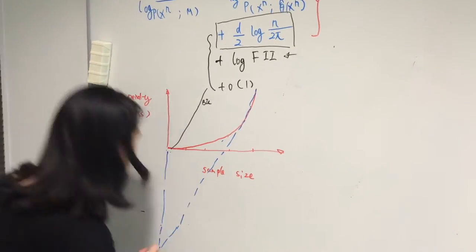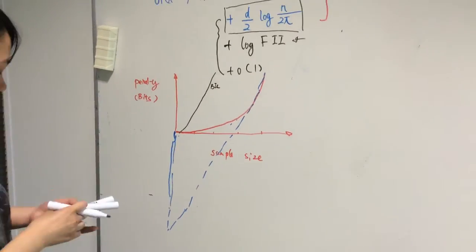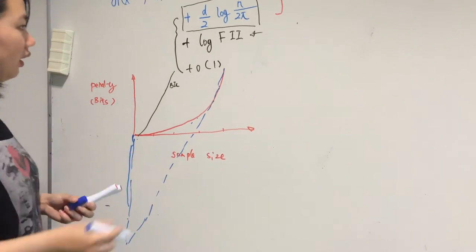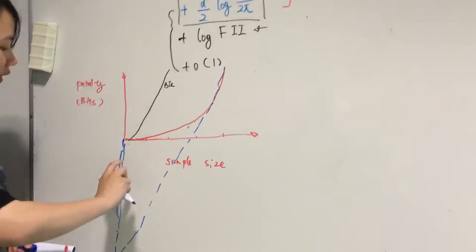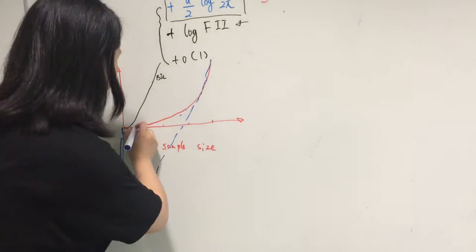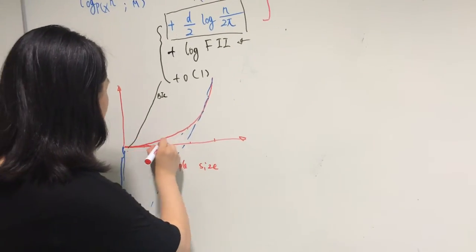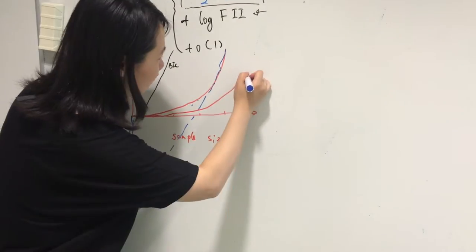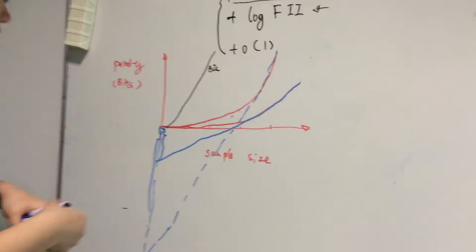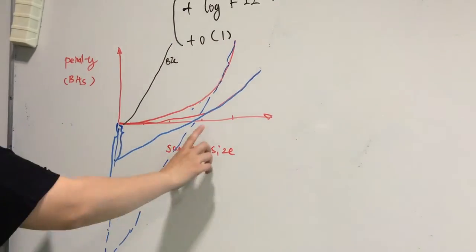And we can see FIA penalty is a very small negative value if sample size is small. For a simpler model, the absolute value of FIA penalty is much smaller. Thus FIA criteria favors complex model.